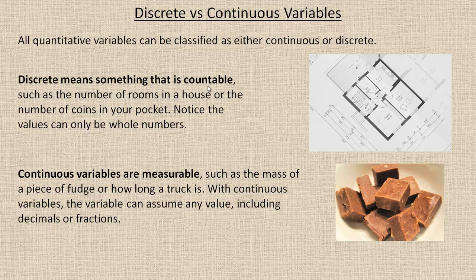Discrete means something that's countable, such as the number of rooms in a house or the number of coins in your pocket. Those values can only be whole numbers. For example, this is the floor plan of a house. We could count the number of rooms. We'd go one, two, three, four, five. There's five rooms in the house. Notice that there can't be like 5.2 rooms. It's only a whole number because it's countable. You don't generally count by .2s or .5s.